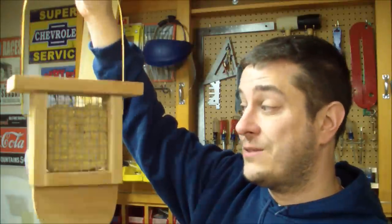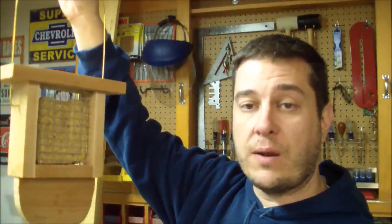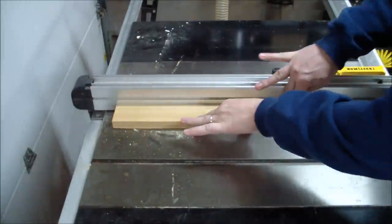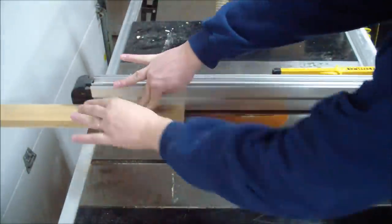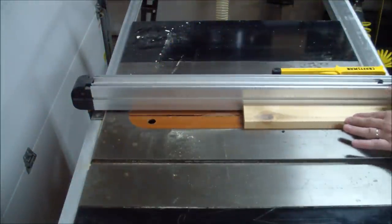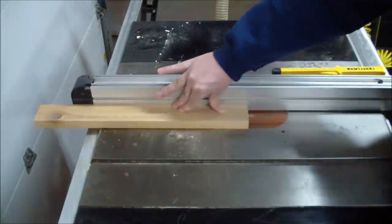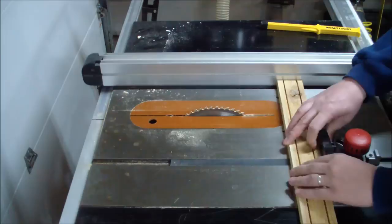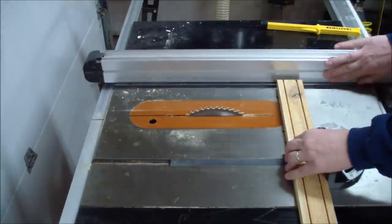To get started with my bird feeder, the first thing I needed to do was cut grooves in my board. This would allow the wire mesh to set on both sides. Then I kept my boards and cross-cut them using my table saw on my sides as well as my bottom.